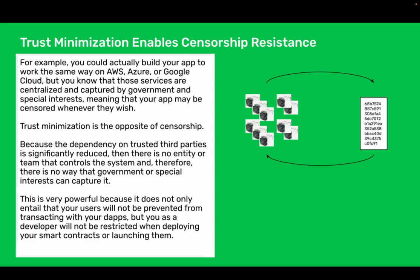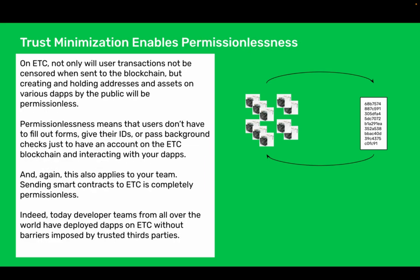This is very powerful because it does not only entail that your users will not be prevented from transacting with your dApps, but you as a developer will not be restricted when deploying your smart contracts or launching them. Trust minimization enables permissionlessness. On ETC, not only will user transactions not be censored when sent to the blockchain, but creating and holding addresses and assets on various dApps by the public will be permissionless. Permissionlessness means that users don't have to fill out forms, show their IDs, or pass background checks just to have an account on the ETC blockchain and interact with your dApps. Sending smart contracts to ETC is completely permissionless. Today, developer teams from all over the world have deployed dApps on ETC without barriers imposed by trusted third parties.